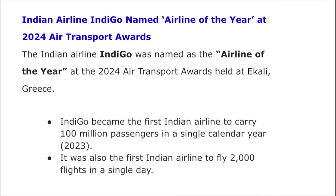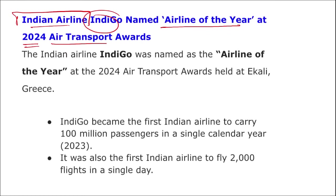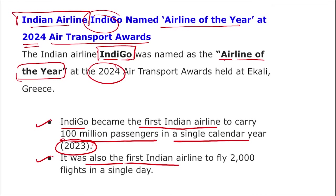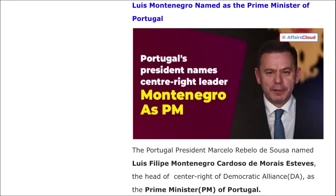Next: Indian airline IndiGo was named the Airline of the Year at the 2024 Air Transport Awards. Which airline has been named Airline of the Year 2024? It is IndiGo. IndiGo also became the first Indian airline to carry 100 million passengers in a single calendar year — in 2023 — and also became the first airline to fly 2,000 flights in a single day.